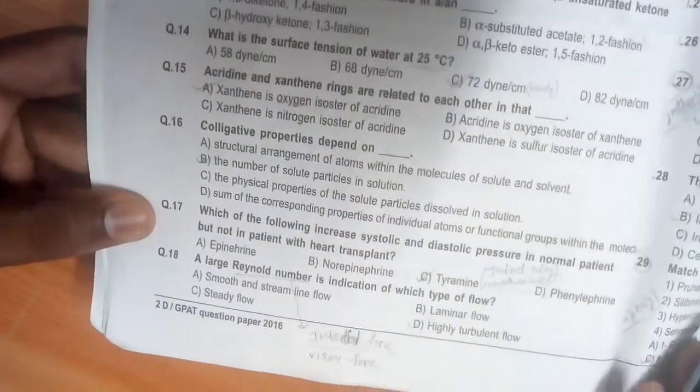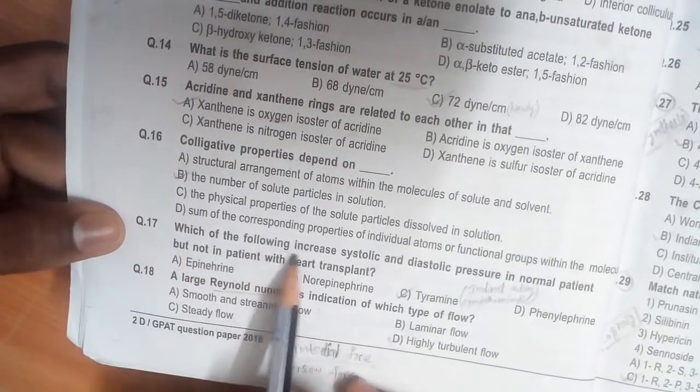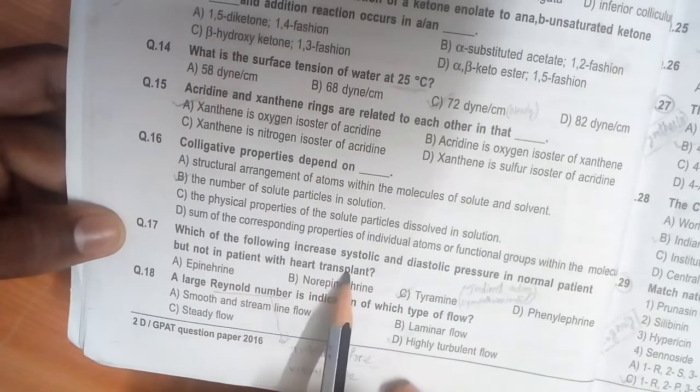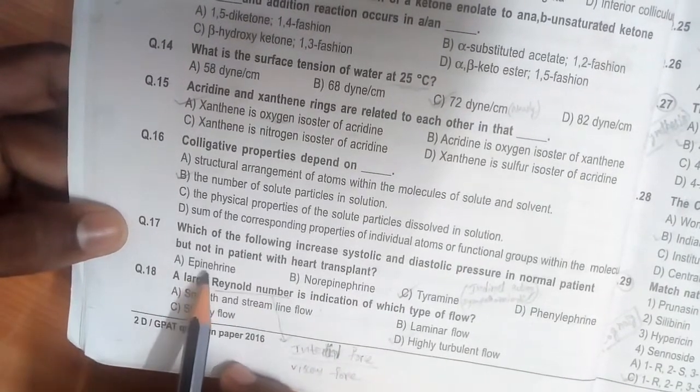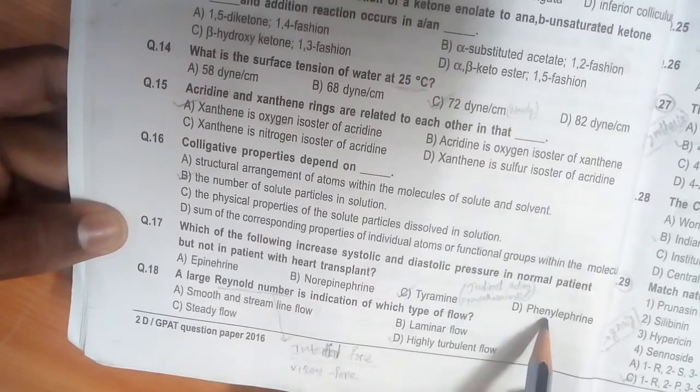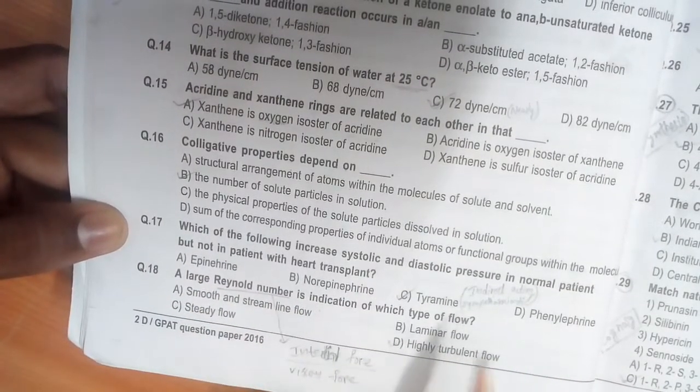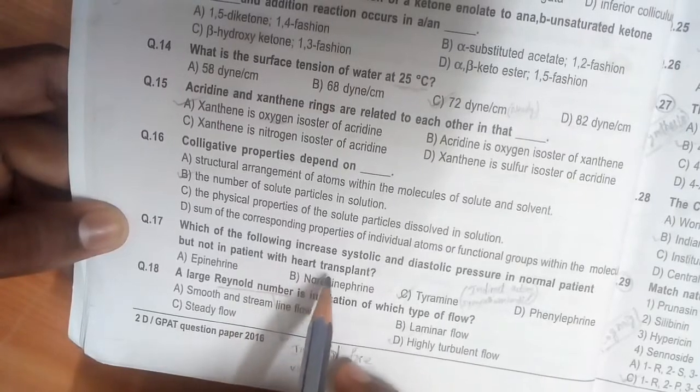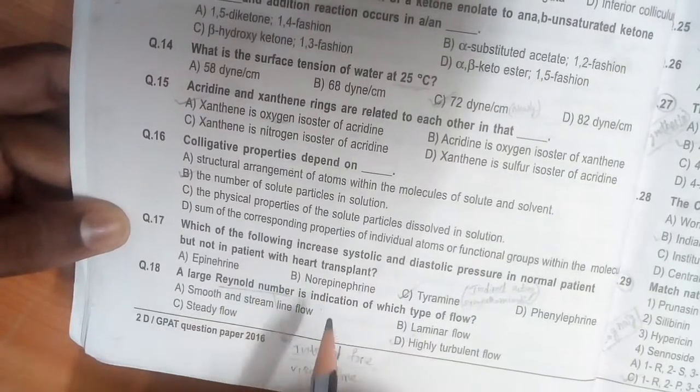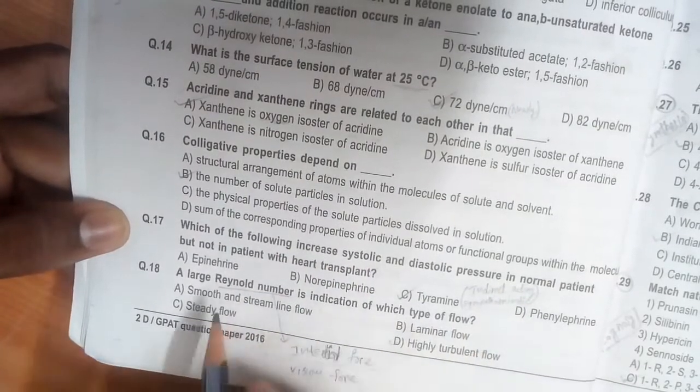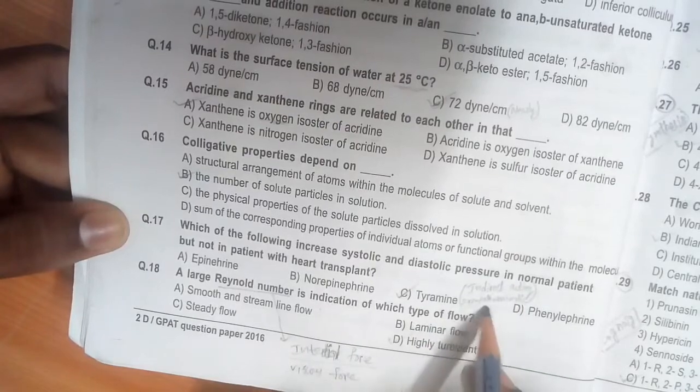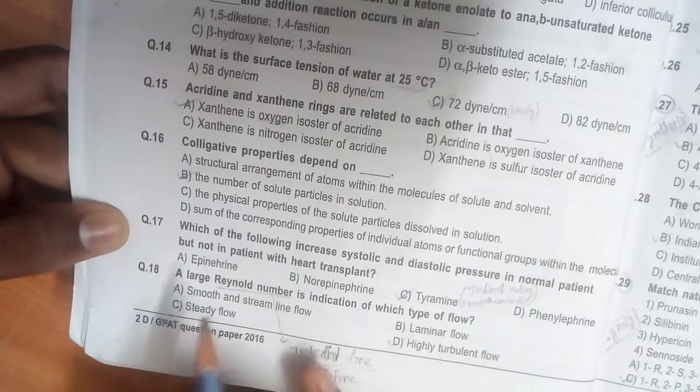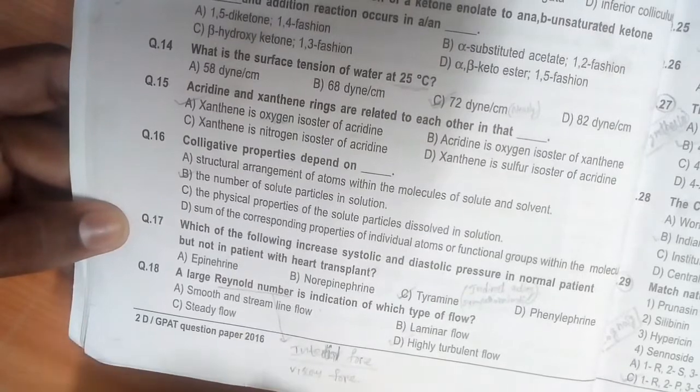Which of the following increases systolic and diastolic pressure in normal patients but not in patients with heart transplantation? Tyramine does not show any action on the heart in heart transplantation because the breakdown of the MAO will lead to prevention of tyramine activity.